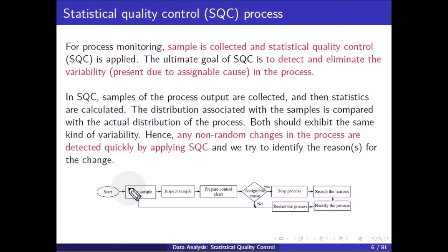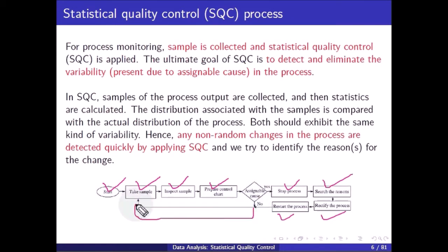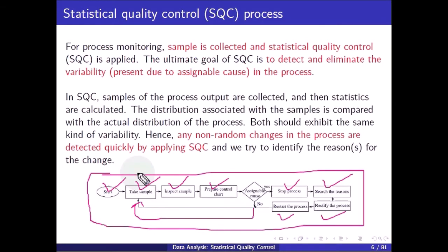The SQC process flow is: start the process, take a sample, inspect the sample, and prepare a control chart. If assignable causes are found, stop the process, search for the reason, rectify the process, and restart it. If no assignable cause is found, take another sample and the process continues. These steps are followed continuously to check the process and products.